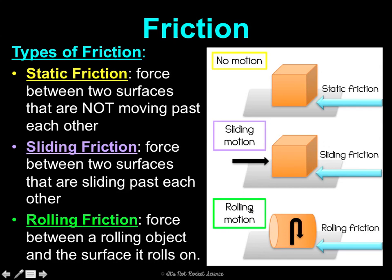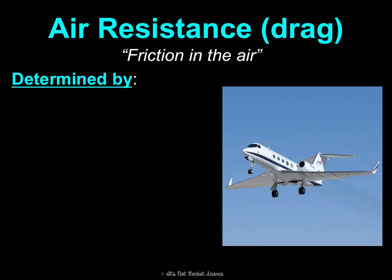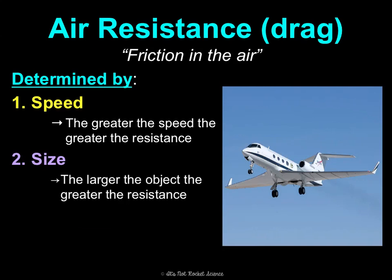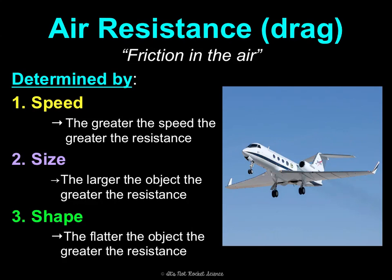Air resistance, also known as drag or friction in the air, is determined by three things. First, speed — the greater the speed, the greater the resistance. Also size — the larger the object, the greater the resistance. And lastly, shape — the flatter the object, the greater the resistance. Think about an airplane landing: flaps come up on the wings to create a flatter shape, which generates more air resistance and more drag to slow down the plane.